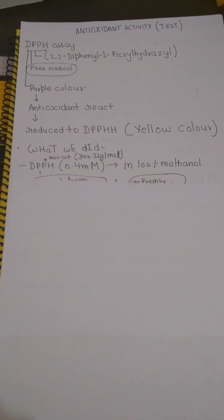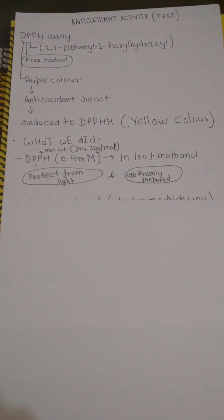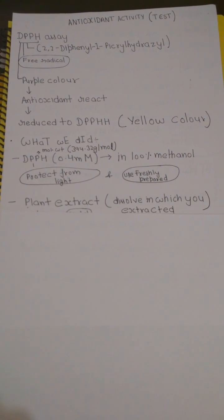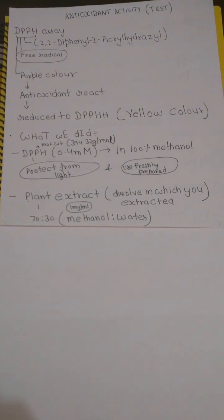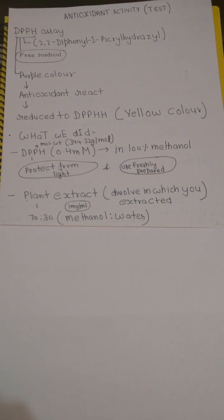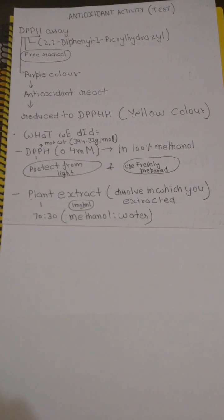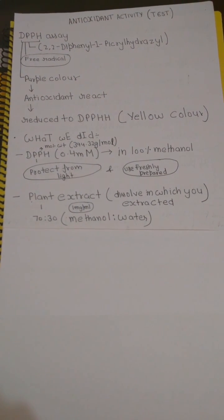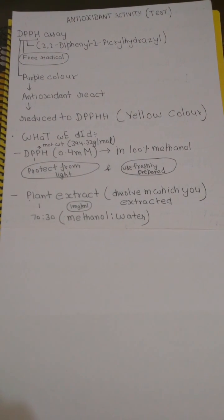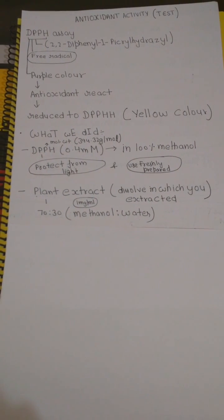Now let's talk about the protocol. First of all, the things that you need: of course DPPH. We prepared 0.4 millimolar DPPH in 100% methanol. Make sure to protect it from light and always use freshly prepared DPPH. The second thing that you will need is plant extract. We prepared 1 mg per ml concentration of plant extract in 70 to 30 ratio of methanol and water.